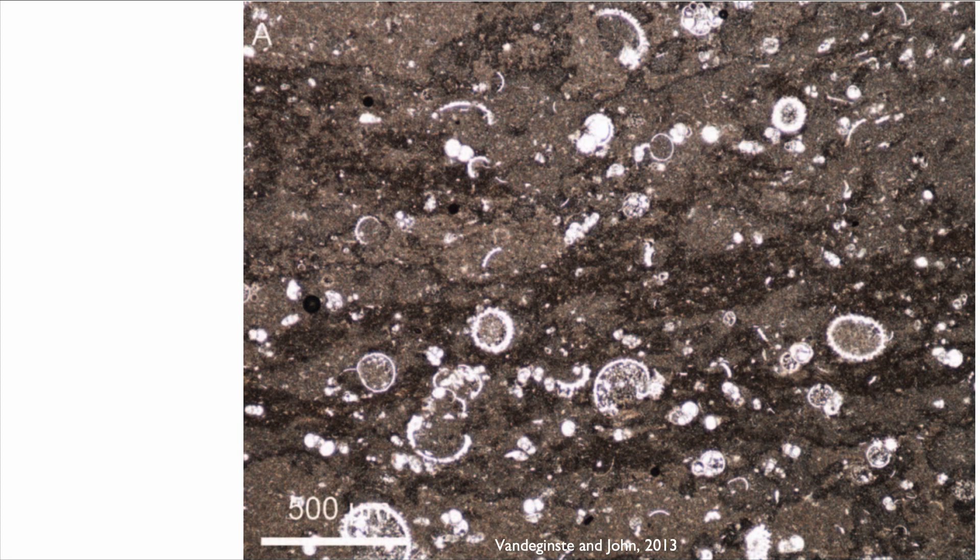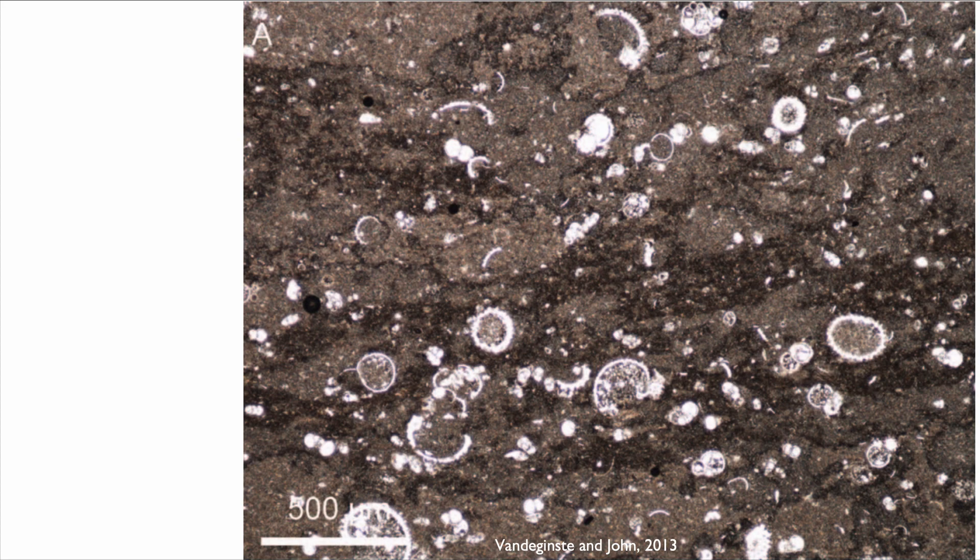But if we apply cathodoluminescence to it, which will basically highlight burial cement, we see a lot of luminosity. That luminosity represents a limestone cement, a calcite cement.